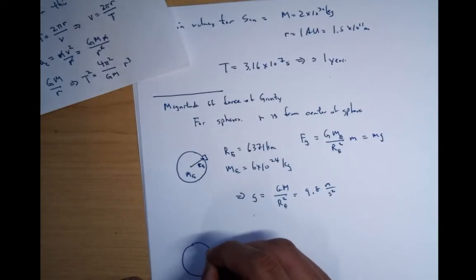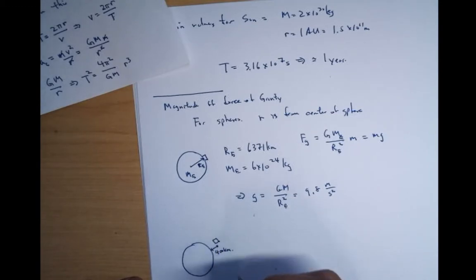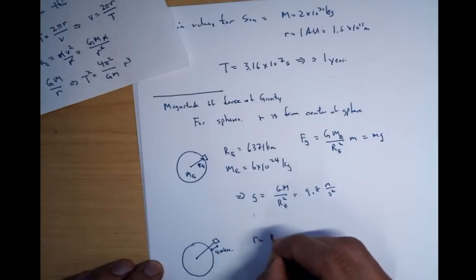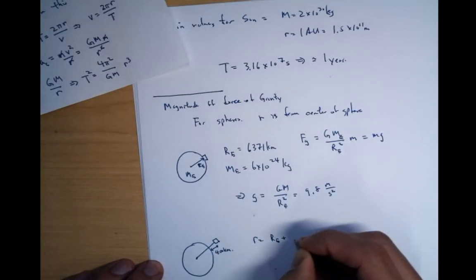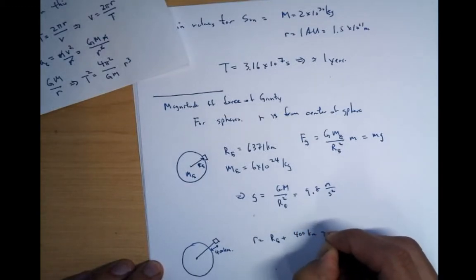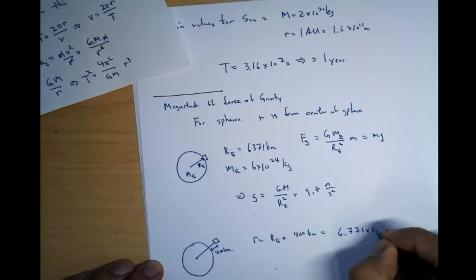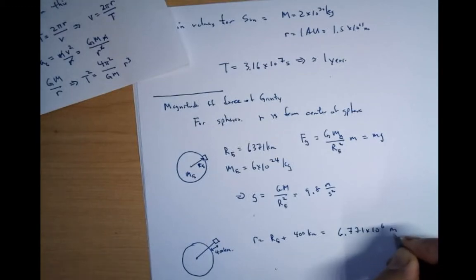So that is, you know, you're sitting on the surface of earth, you're sitting on some satellite above the surface of the earth by about 400 kilometers. So now r is this distance here. r is going to be equal to the radius of the earth plus 400 kilometers. So this is 6.771 times 10 to the 6th meters now.